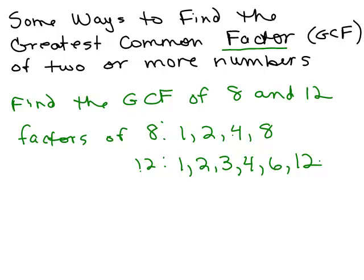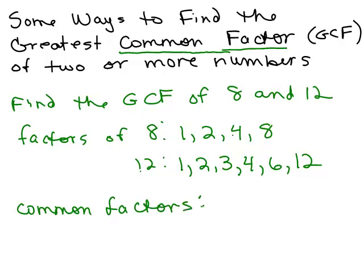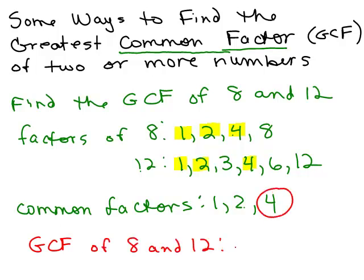On another video, I show you how to easily get all the factors. But for now, these are the factors of 8 and the factors of 12. I want the common factors — what are factors of both 8 and 12? Well, I see I have a 1 in each of them, a 2 in each of them, and a 4 in each of them. So my common factors are 1, 2, and 4. So the greatest common factor of 8 and 12 is the biggest one, which is 4.